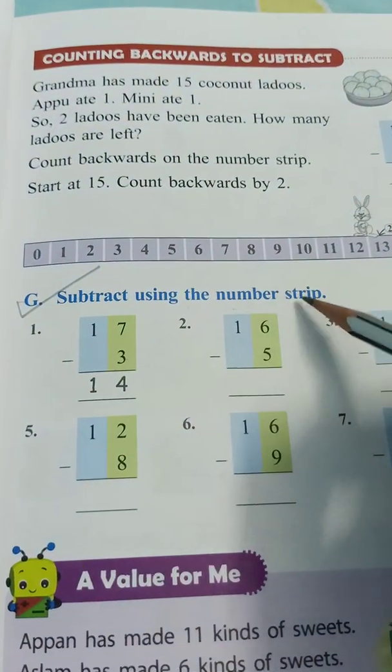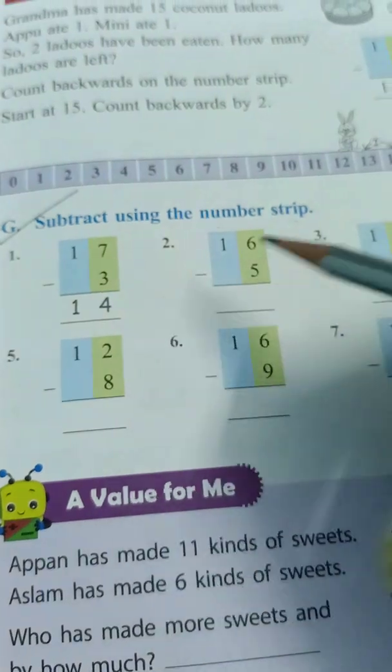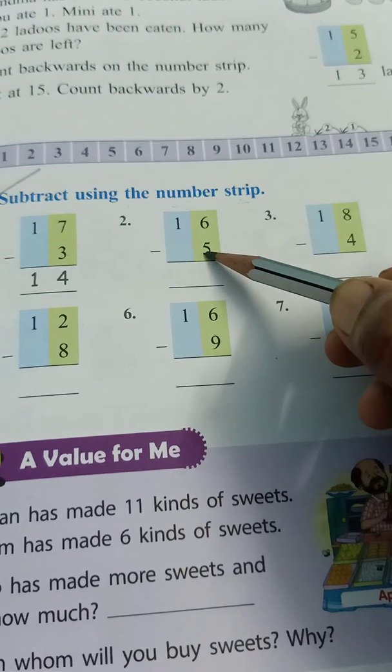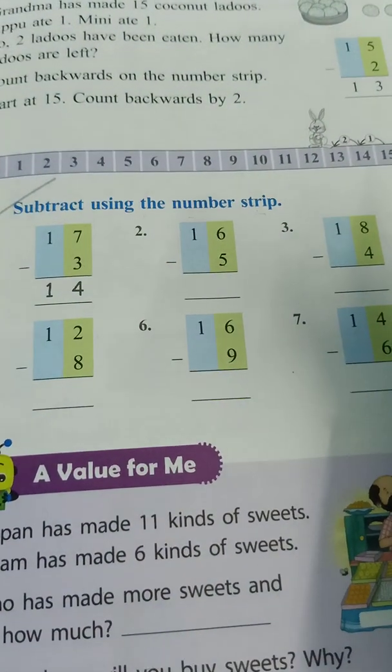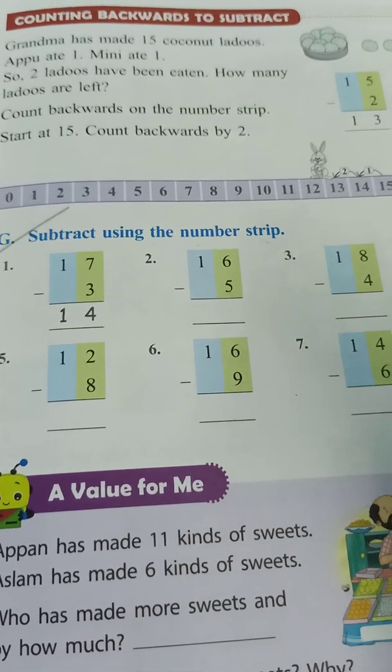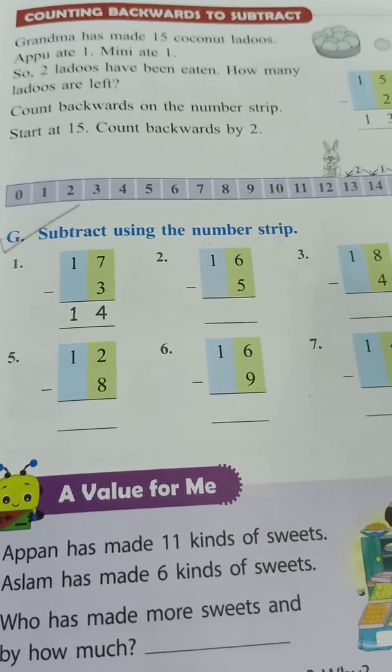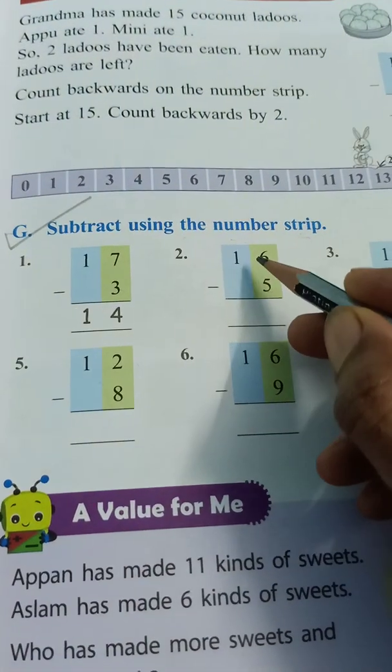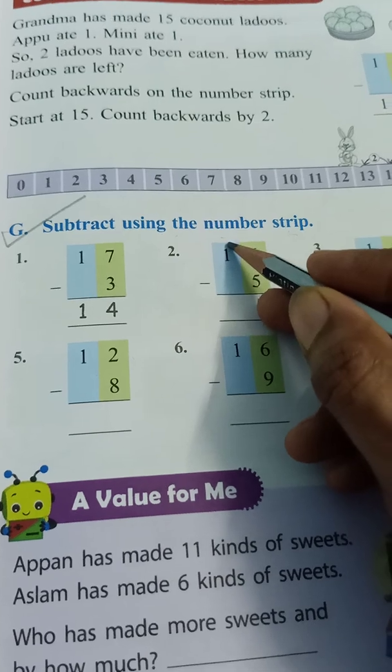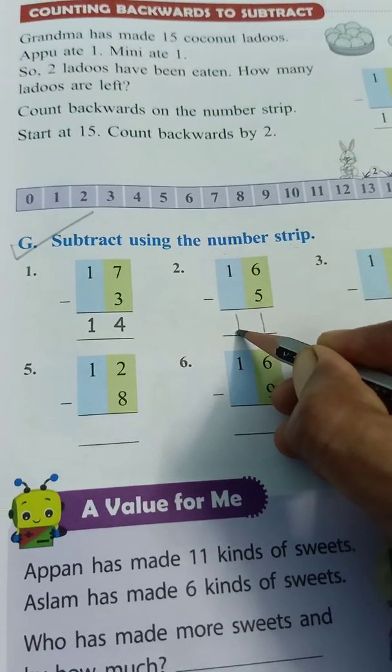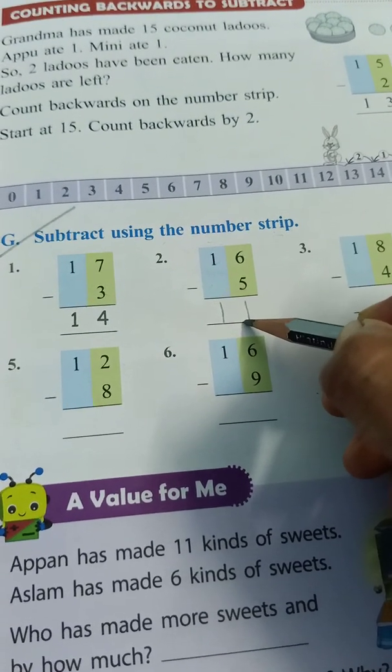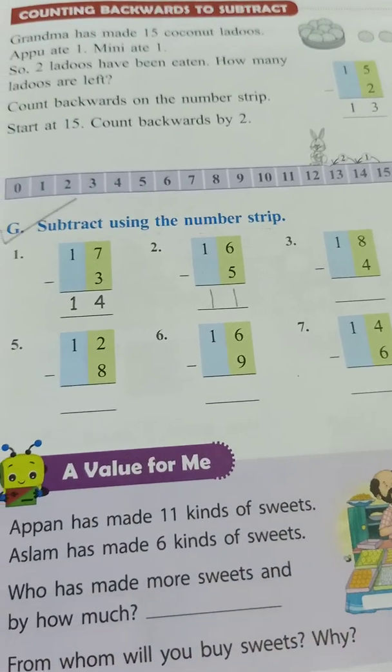Subtract using the number strip. 1 is already done for you children. Now here again, 6 minus 5. Take out 6 fingers and you have to minus 5 fingers. 1, 2, 3, 4, 5. How many are left? 6 minus 5 is equal to 1. And here there is no number, so 1 will remain same. 16 minus 5 is equal to 11. The rest you have to do children.